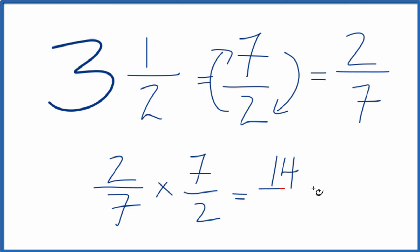2 times 7 is 14. 7 times 2 is 14. And 14 divided by 14, that's 1. So we know we did this correctly. The reciprocal for 3 and 1 half is 2 7ths.